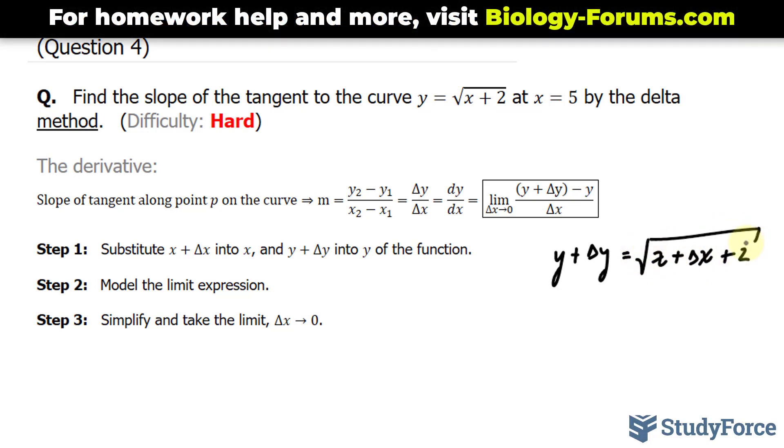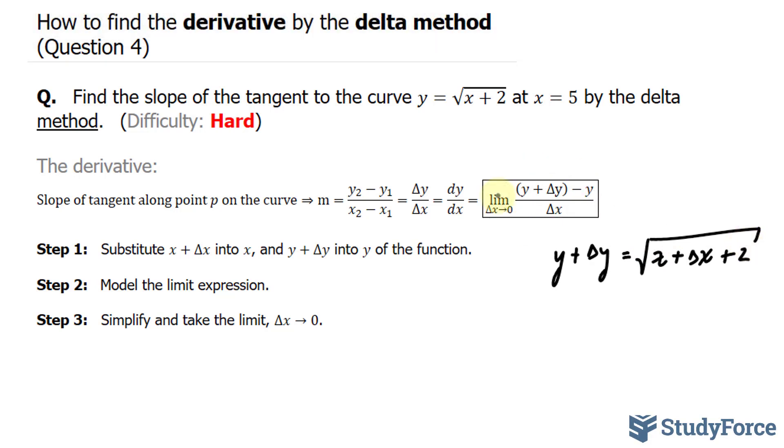Step number 2 says model the limit expression. The limit expression is right here. This part specifically can be substituted with all of this because y plus delta y equals this expression minus what y is. So we have the limit as delta x approaches 0 for the expression square root of x plus delta x plus 2 minus the square root of x plus 2 all over delta x.